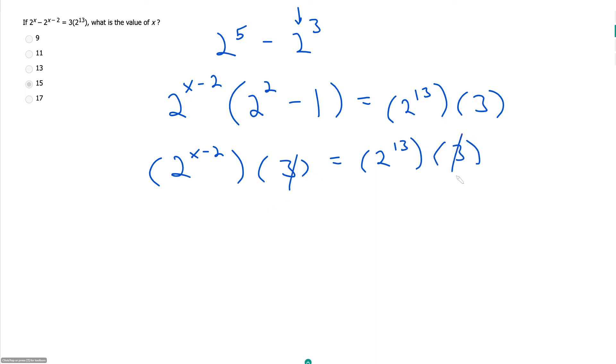And so these guys cancel out, and now my bases on each side match, and so my powers should be the same. I can just make an equation where x minus 2 must be equal to 13. Therefore, x is 15.